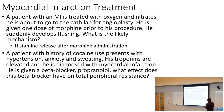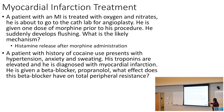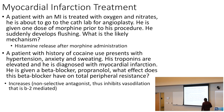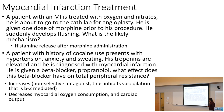A patient with a history of cocaine use presents with hypertension, anxiety, and sweating. His troponins are elevated and he is diagnosed with a myocardial infarction. He is given a beta blocker — propranolol. If you give a beta blocker after cocaine, that is going to cause an increase in total peripheral resistance. These beta blockers cause non-inhibition of the vasodilation that is beta-2 mediated, and you get this so-called unopposed alpha.